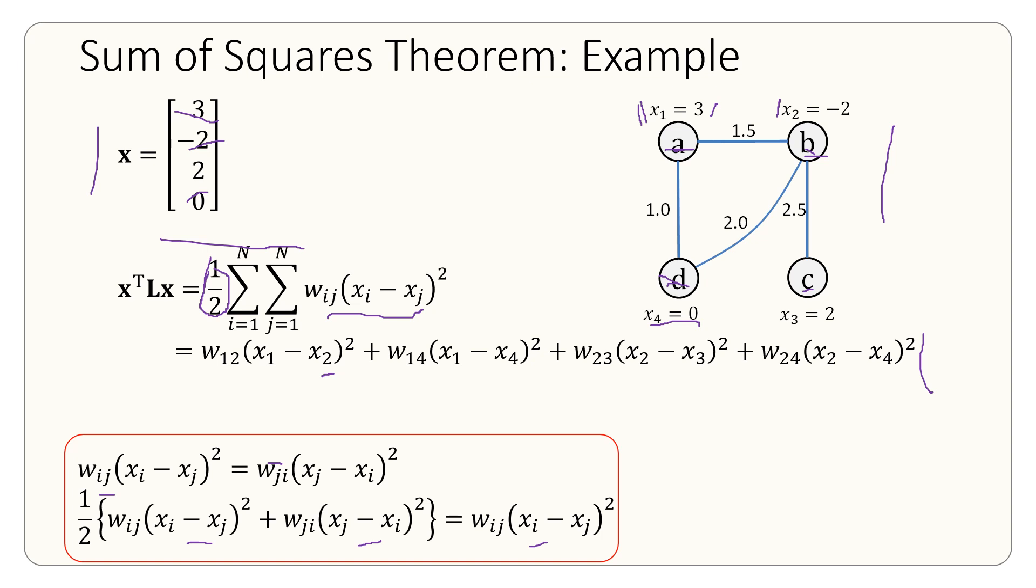Now each term corresponds to an edge. Look at the first term here, w12, that's this weight, 1.5 times x1 minus x2 squared. The second one is w14 which is 1 times x1 minus x4 squared. This is the second term and so on.